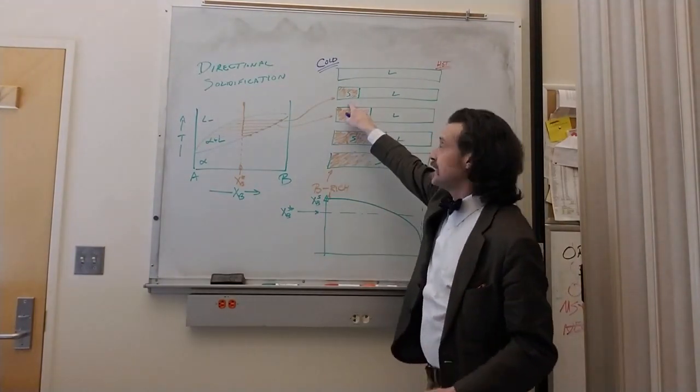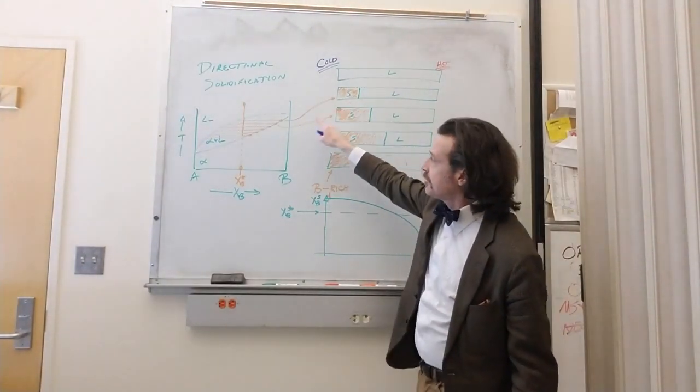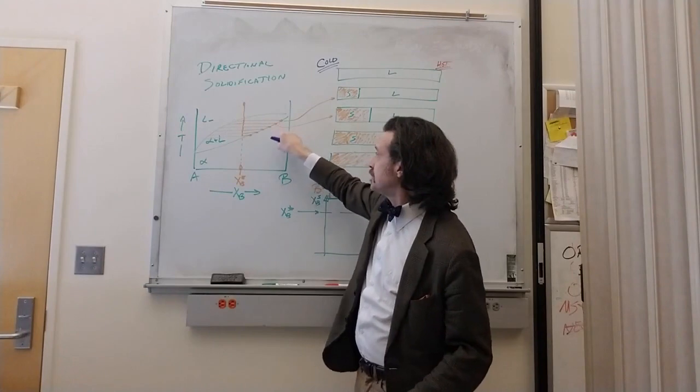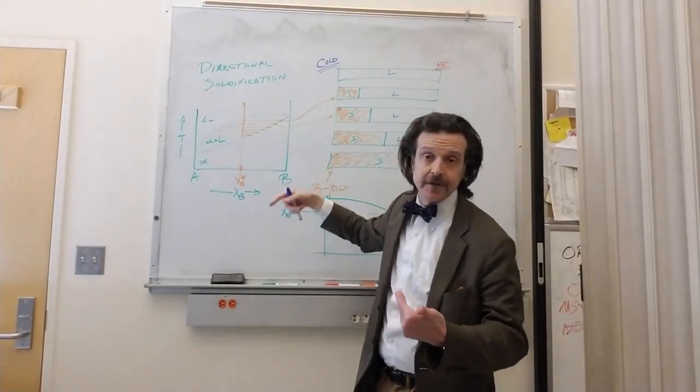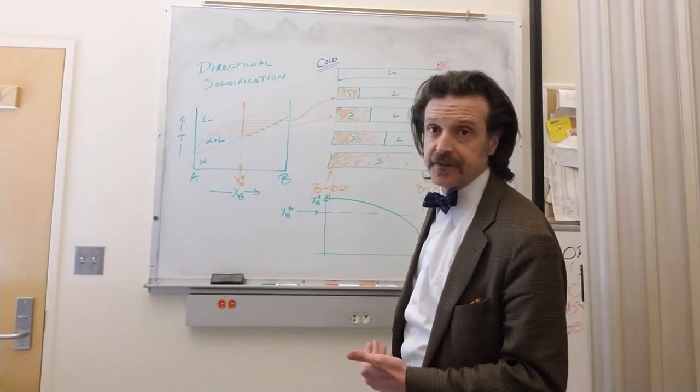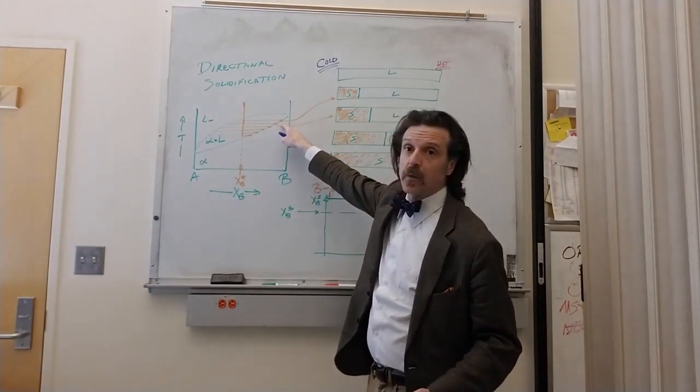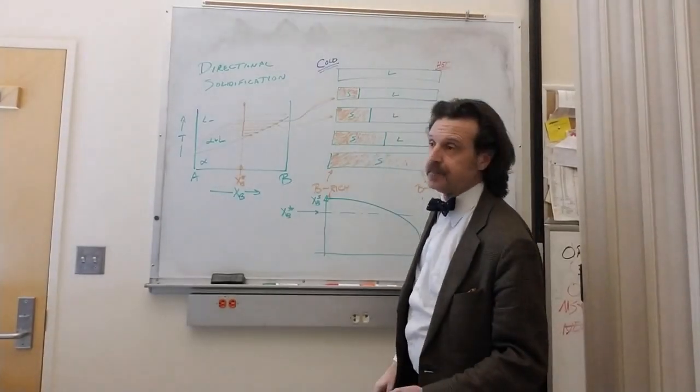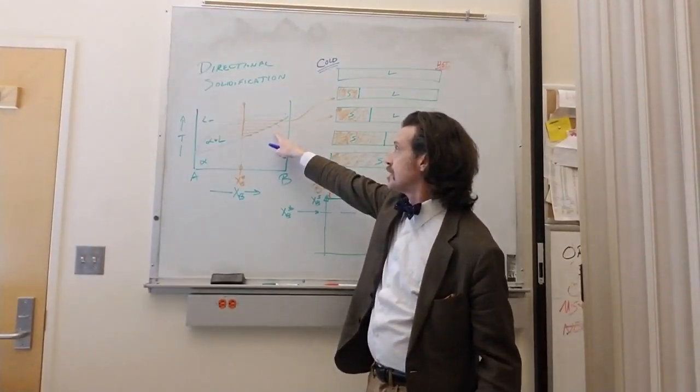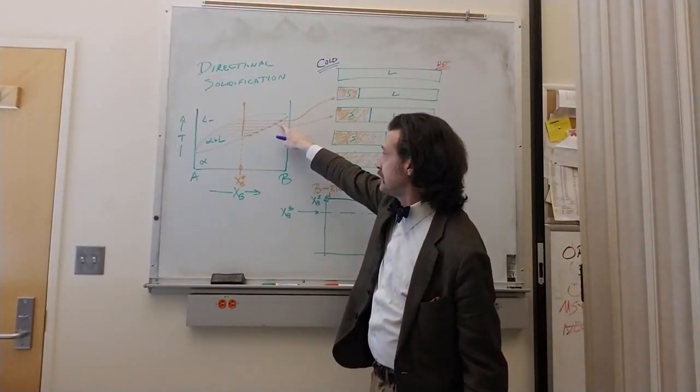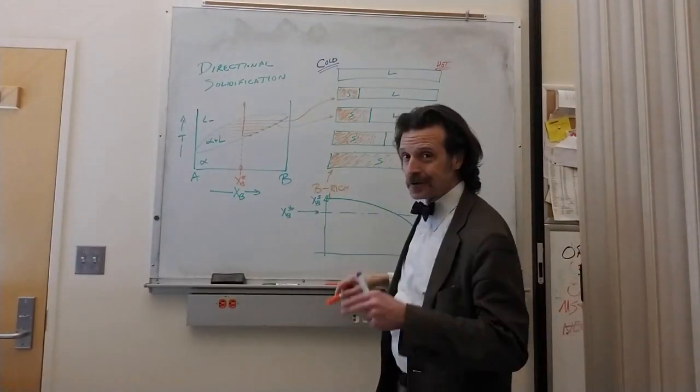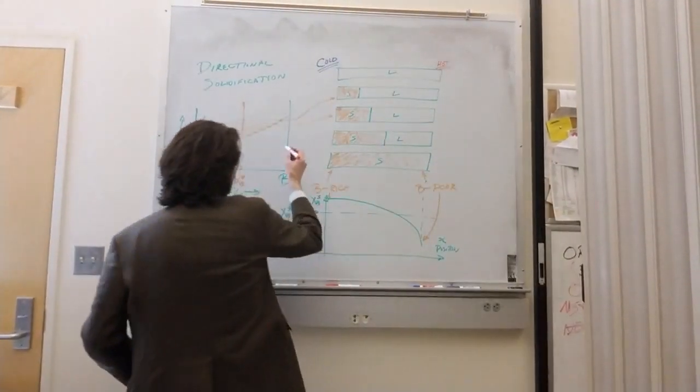As we cool, we get a first solid that forms, and that first solid, we can determine from the composition by looking at the phase diagram and drawing our tie line and identifying where the tie line intercepts the phase boundary with alpha. So that first solid is going to have this composition.